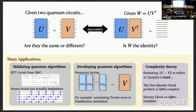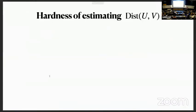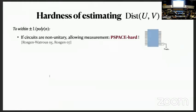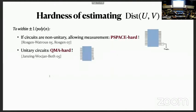More specifically, you have the non-identity check and the identity check, which are QMA and co-QMA complete. Estimating this distance to within additive inverse polynomial error is hard. In the general case, when you have some quantum circuit and you're allowed measurement and maybe tracing stuff out, this problem turns out to be PSPACE hard. If we restrict ourselves to just unitary circuits, then this problem is still QMA hard.